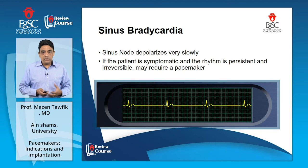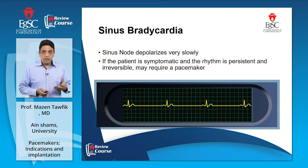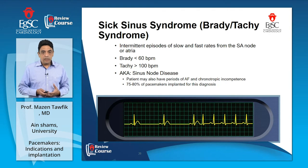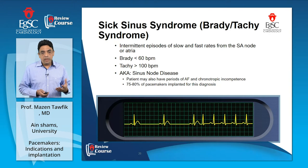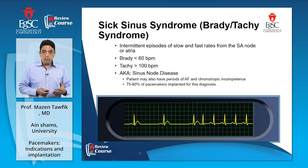Sinus bradycardia is a diminished rate of depolarization of the SA node, depolarizing at a rate lower than 60 beats per minute. If the patient is symptomatic, the rhythm is persistent and does not meet the physiological demands — especially with exercise — and is irreversible, it requires a pacemaker. Sick sinus syndrome, previously known as brady-tachy syndrome, involves intermittent episodes of slow and fast rates from the SA node or atrial conduction tissue, with periods of bradycardia alternating with tachyarrhythmias at a rate of 100 beats per minute or higher, including sinus arrest, and most famously atrial fibrillation.